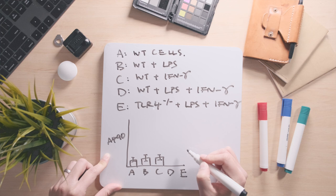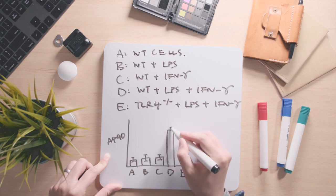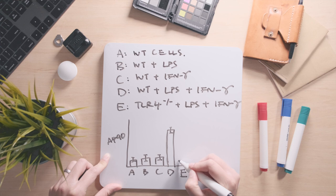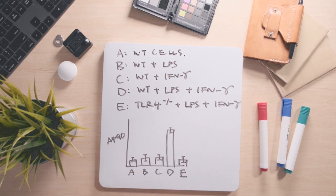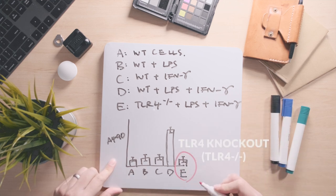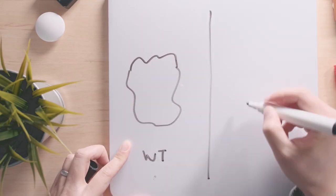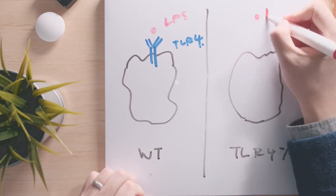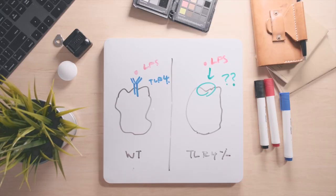It is in sample D where everything converges. The wild-type cells are exposed to interferon gamma to prime the expression of iNOS, which can then produce nitric oxide after PAMP recognition. In this case, the PAMP is LPS, and you will see the nitrite concentration is at its highest level across this sample. In sample E, however, there is no perceptible increase in nitrite level despite the presence of interferon gamma and LPS. The one difference is that TLR4 has been knocked out — TLR4 is the receptor that recognizes LPS — so the capacity for macrophages to recognize LPS as a PAMP is significantly reduced, resulting in minimal nitric oxide production despite the presence of priming signals and PAMPs.